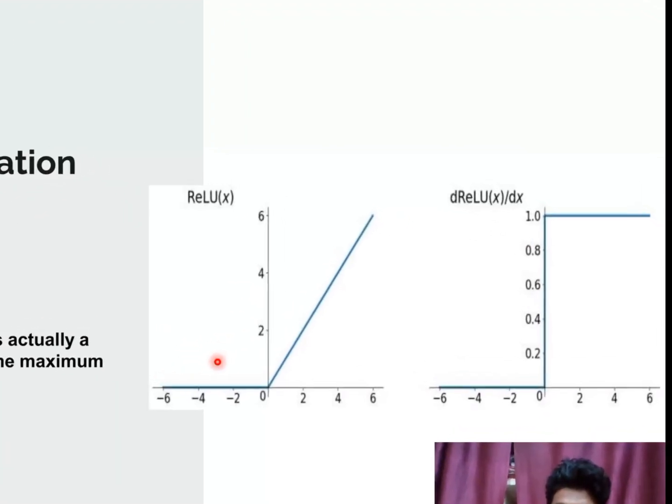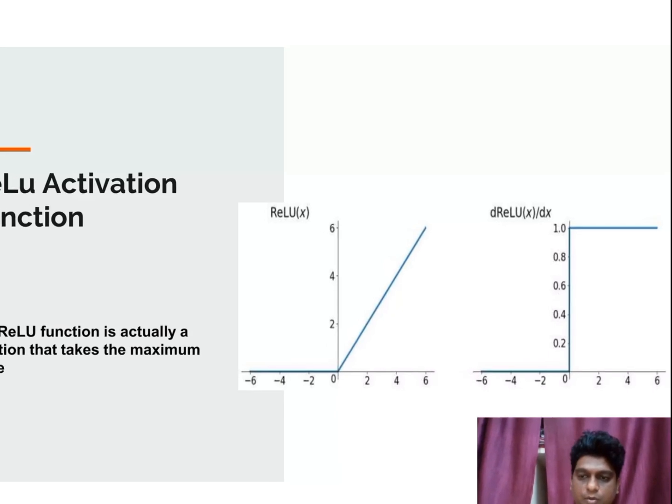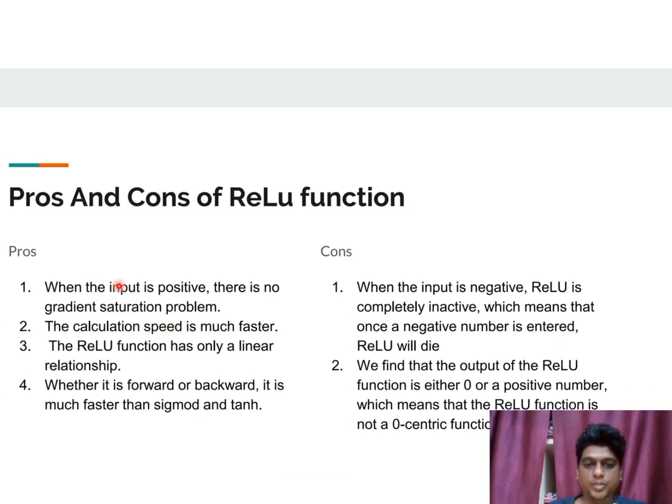Third one is a rectified linear unit activation. First see the advantages: when the input is positive means then there is no gradient saturation problem but when the input is negative means automatically this becomes inactive and the calculation speed is much more faster and it has only a linear relationship function in between them. It works well in both forward and backward propagation and it is faster than the sigmoid and tanh functions but when the output is either 0 or a positive number it means thus this function is not a zero centric function.